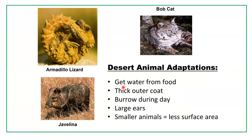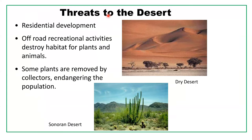Desert animal adaptations include getting water from food, having thick outer coats to prevent water loss, burrowing during the day, and having large ears for cooling. Usually these are smaller animals with less surface area. Large ears allow some evaporative cooling. The biggest threat to the desert, as with any environment, is human activity — residential development and recreational activities destroy habitat for plants and animals, and some plants are removed by collectors, endangering populations.